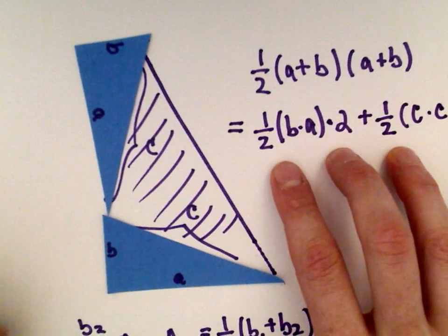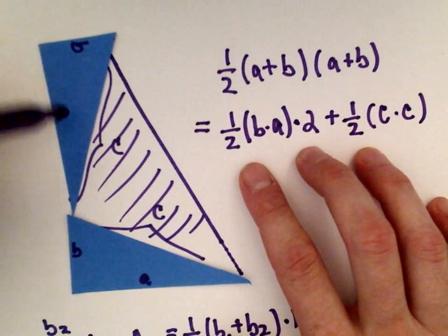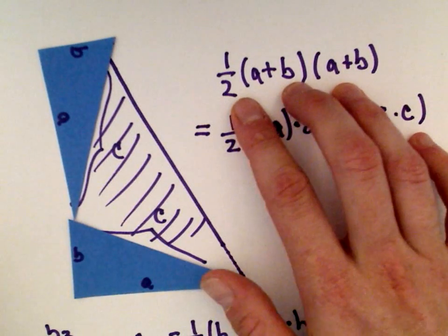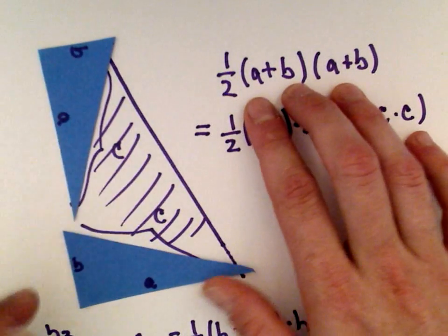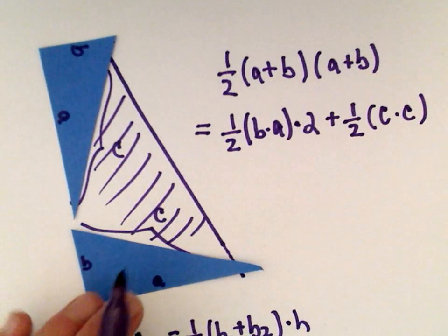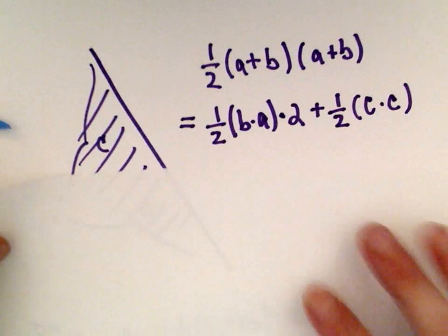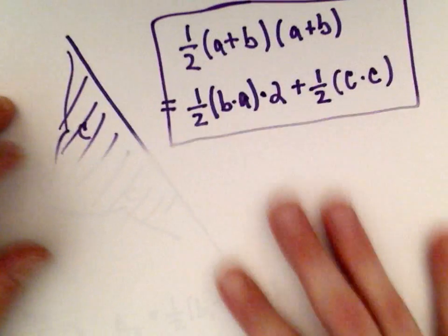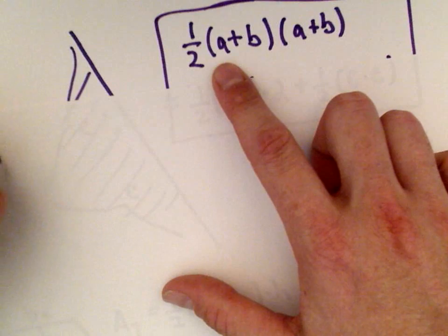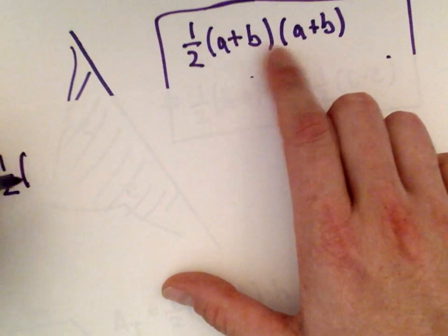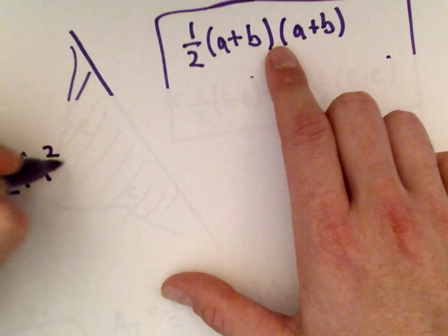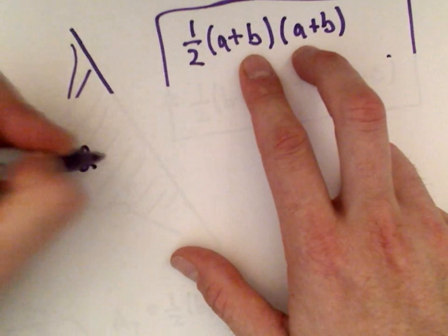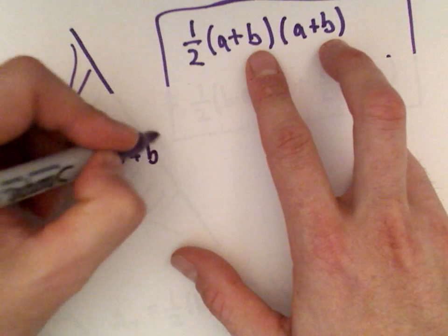I'm just counting up triangle plus triangle plus triangle. In my first expression, I'm using the formula for area of a trapezoid. If we simplify this equation, let's distribute. There's my one half. If we do A plus B times A plus B, A times A that's A squared, A times B is AB, we'll get another AB or 2AB, B times B that's B squared.